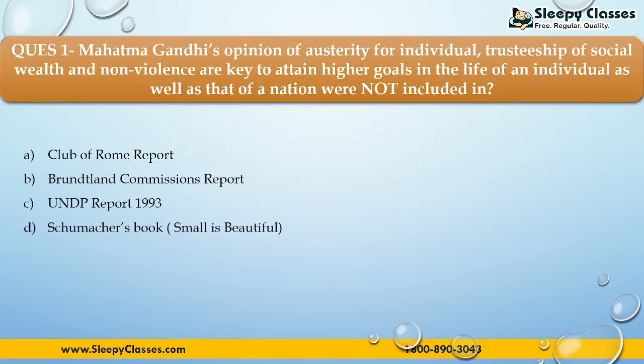Mahatma Gandhi's opinion of austerity for individuals, trusteeship of social wealth, and non-violence are the key to attain higher goals in the life of an individual as well as that of a nation. These were not included in: First, the Club of Rome report; Second,